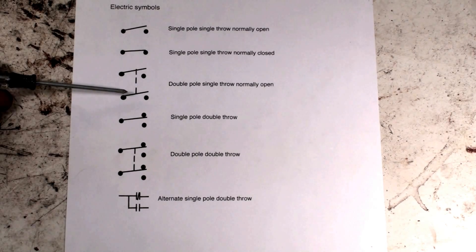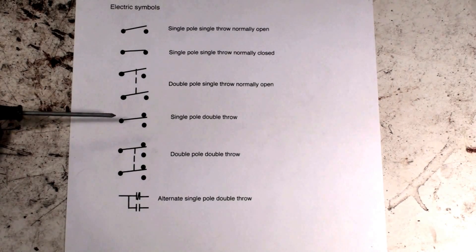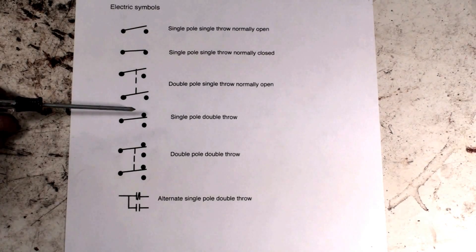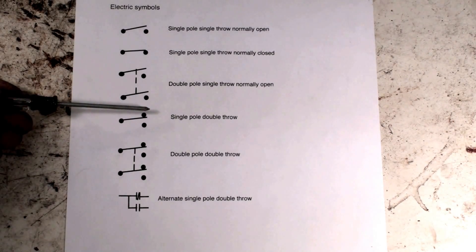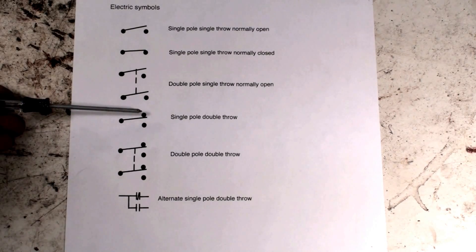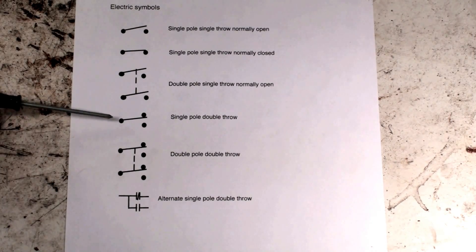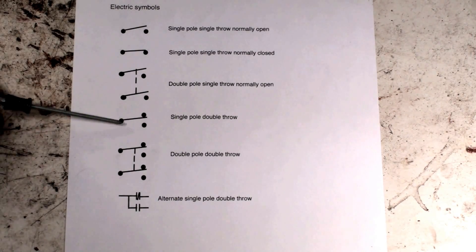Now here's a single pole double throw, and it's switched on somewhere all the time. It's going power through here once in this position. When it changes position, no power goes through here - it only goes through here. So single pole double throw, still all manual switches.